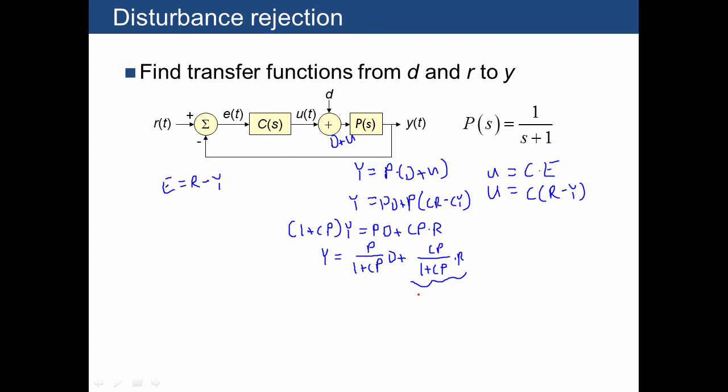And this term we've already seen before, this is the closed-loop transfer function from R to Y. And for this system, let's say that we're applying a proportional feedback control. Then right away, we know that the closed-loop transfer function is going to be equal to Kp divided by S plus Kp plus 1. We've already done that before. And then let's find out what the effect of the disturbance input is. The disturbance is going to give us 1 over S plus Kp plus 1.